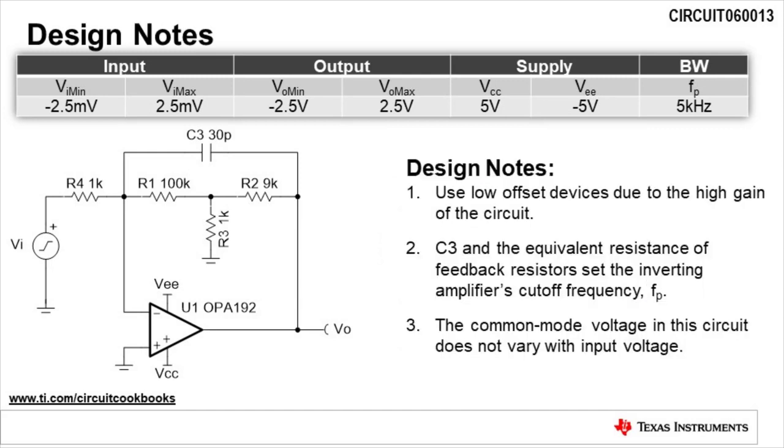When designing an inverting amplifier with a T network feedback circuit, there are a few design notes to be aware of. First, be sure to use low offset devices due to the high gain of the circuit. Next, C3 and the equivalent resistance of the feedback resistors set the inverting amplifier's cutoff frequency, Fp.